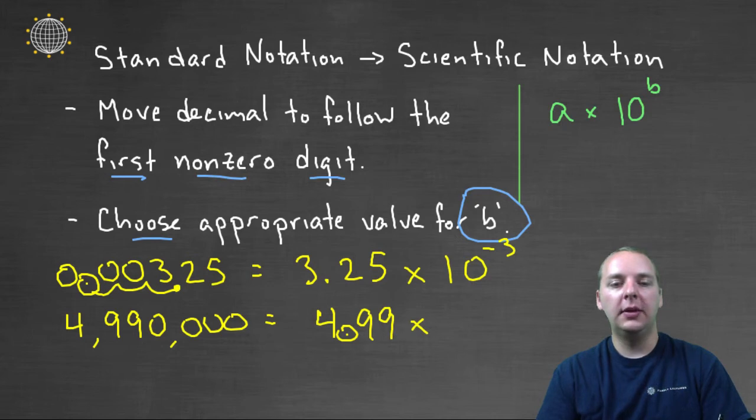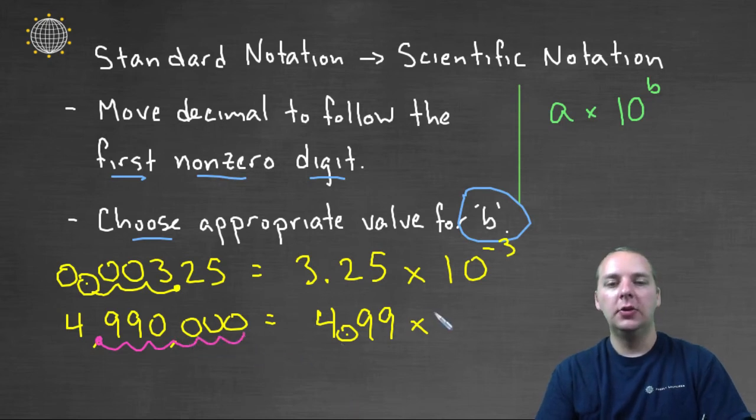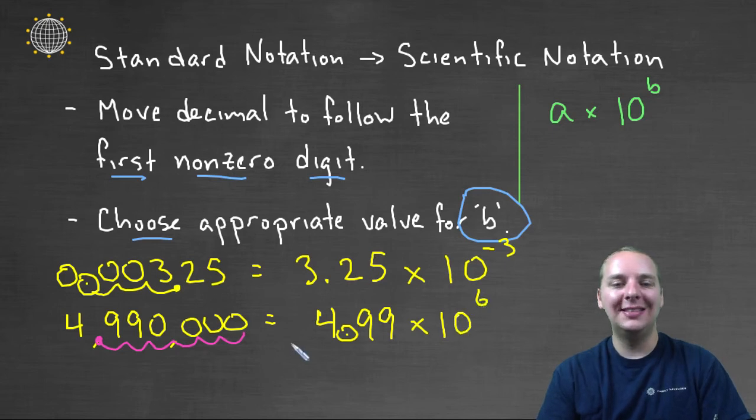So how many decimal places will we need to move this guy to the right? Well if the decimal place was here, we need to move it 1, 2, 3, 4, 5, 6 places to the right. So it would be 4.99 times 10 to the sixth power.